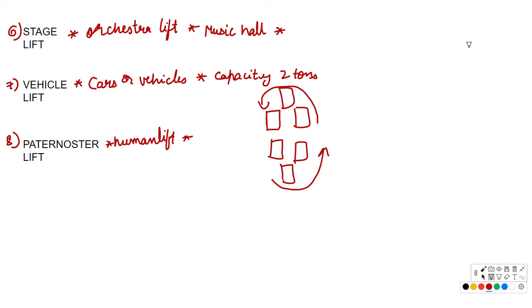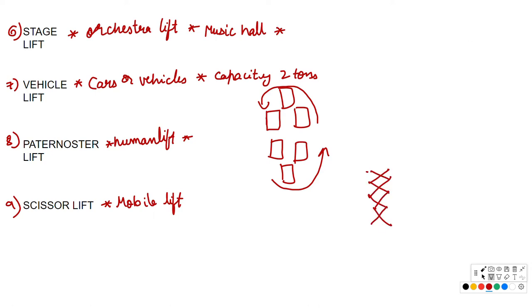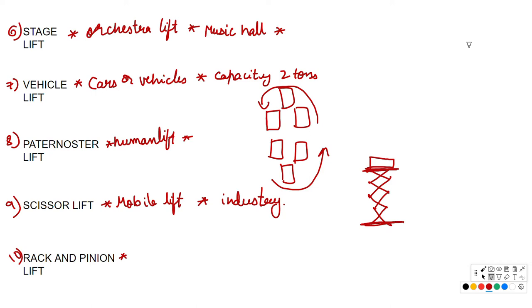Next is the scissor lift, which is a movable or mobile lift that looks like a scissor with a platform on top. It raises goods from one level to another and is used in factories or industries. Next is the rack and pinion lift, designed to move materials during construction from one level to another.